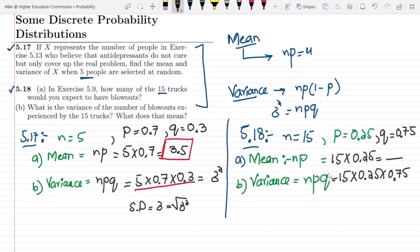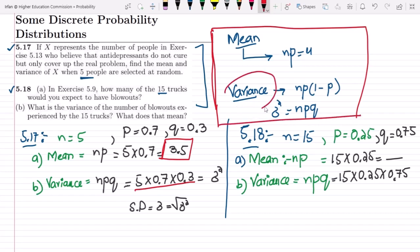So this is basically the solution of question 5.17 and 5.18 which are related with the mean and variance of the binomial probability distribution. So that's it for today in which we have discussed the mean and solutions of questions which are related to mean and variance of the binomial distribution. See you soon.